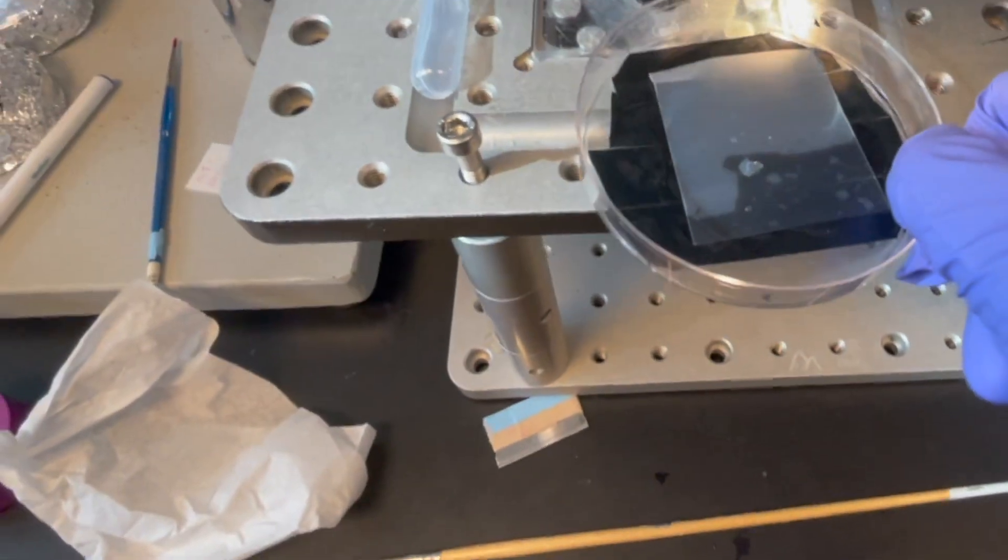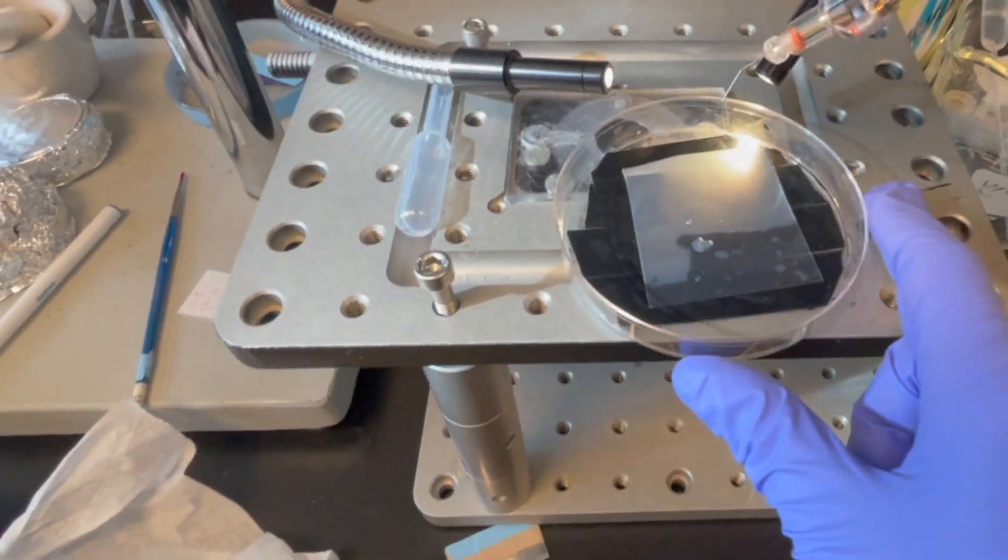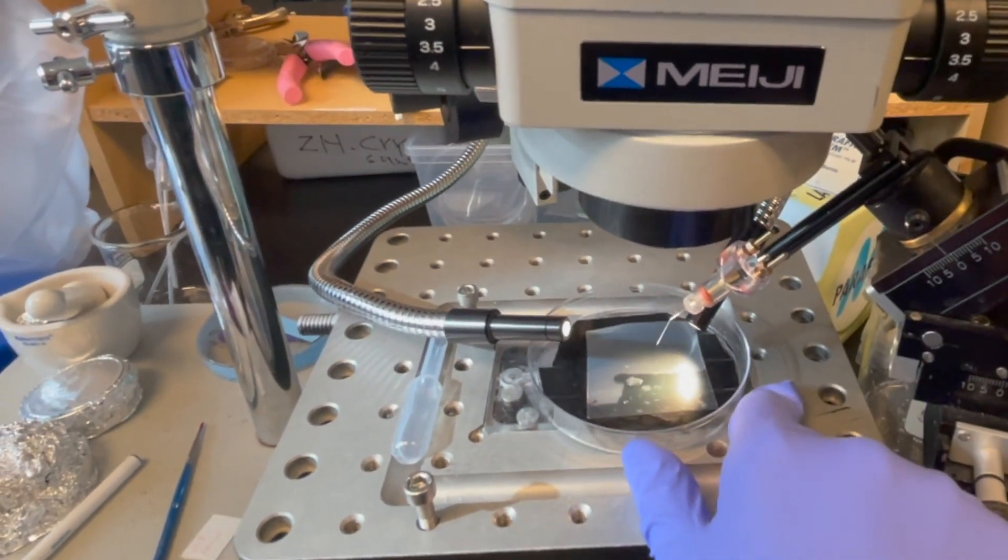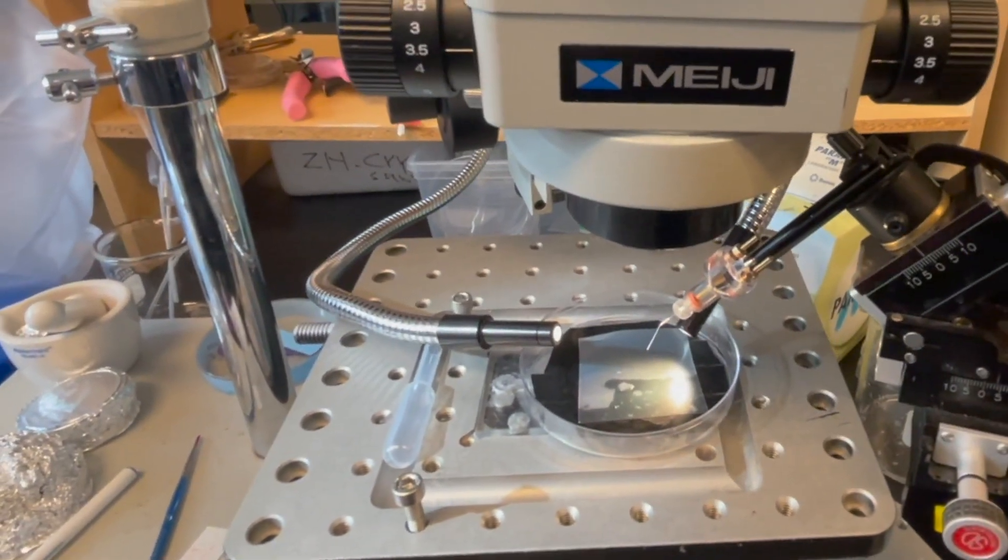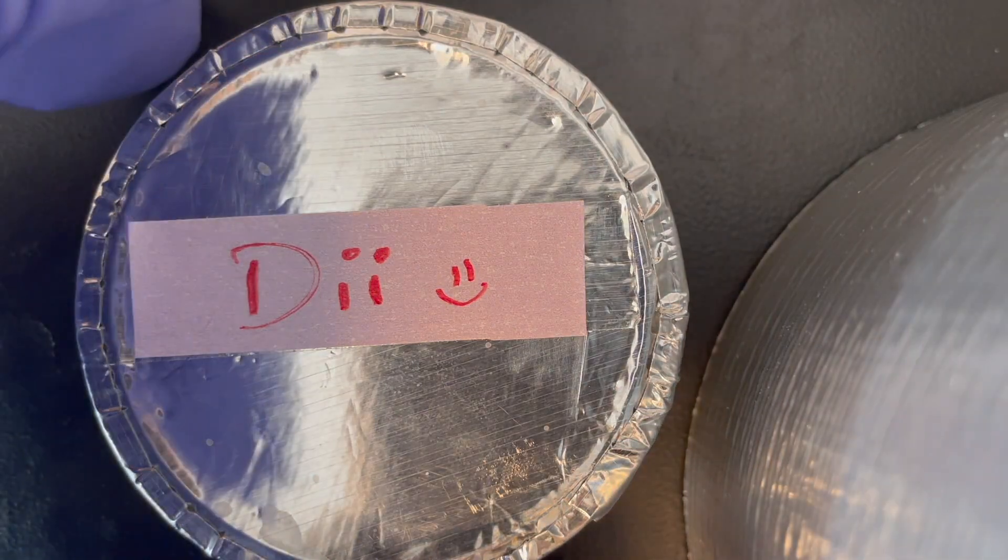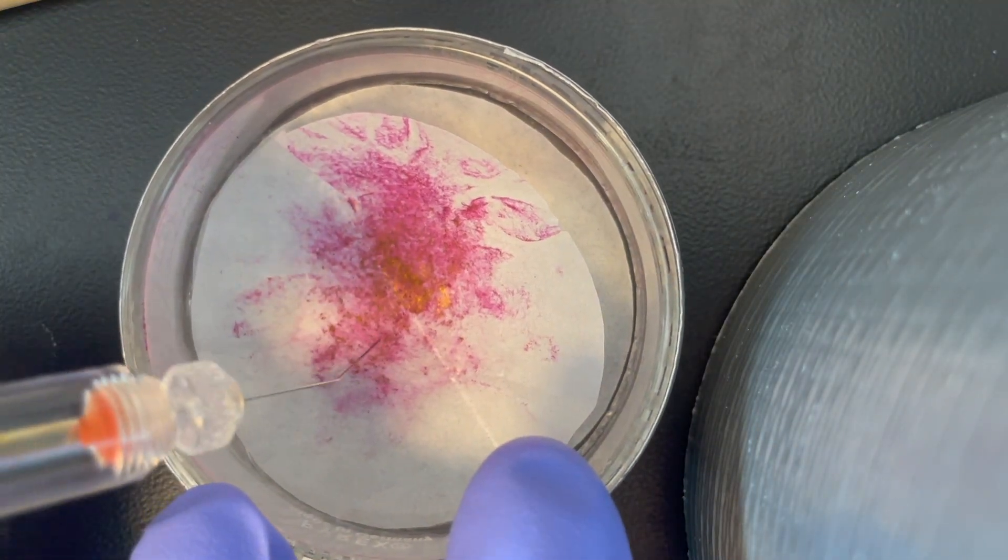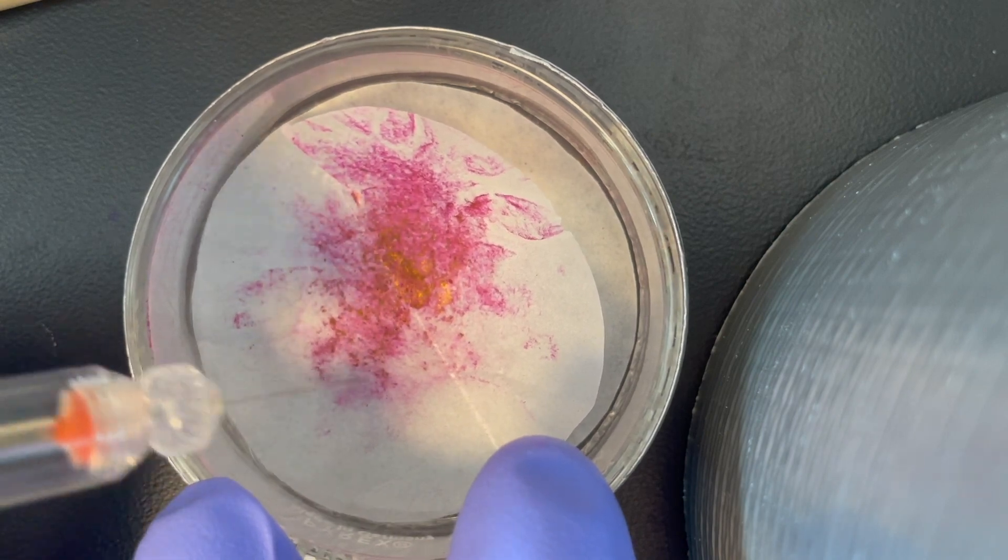Place tissue under a dissection microscope. Using a small glass pipette or dissection pin, gently pick up some Di-I crystals onto the end of the pin. For best results, ensure that the crystals are small. A sonicator or mortar and pestle can be used to break up the crystals.